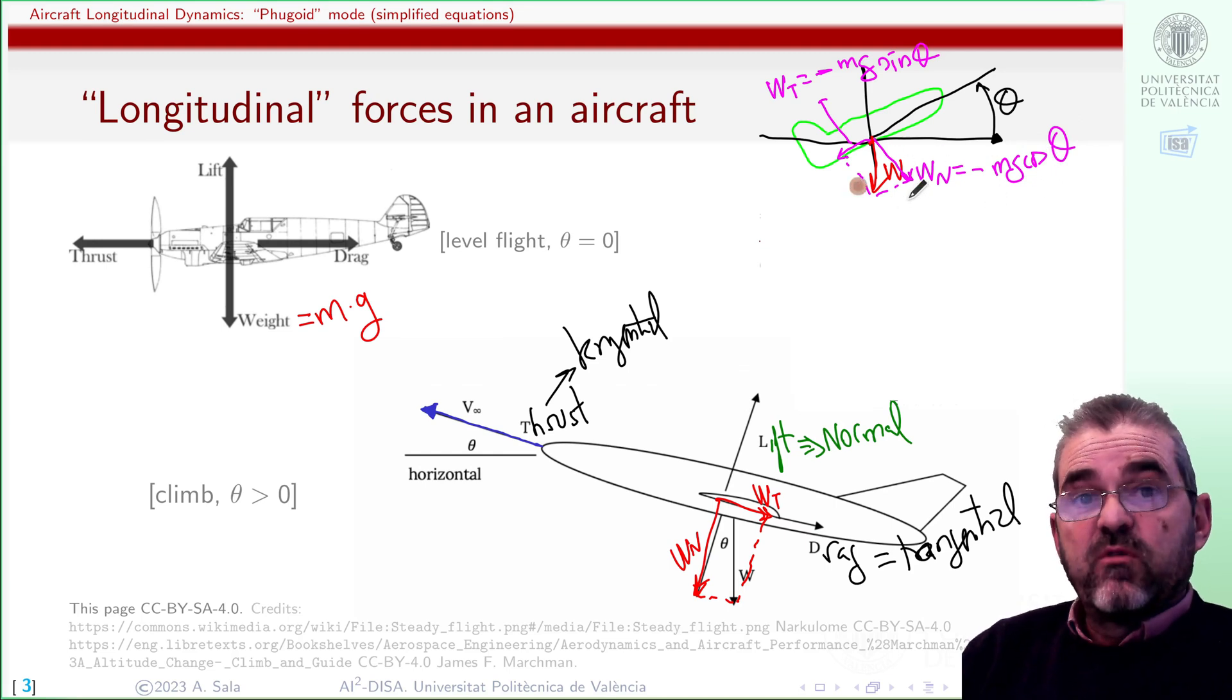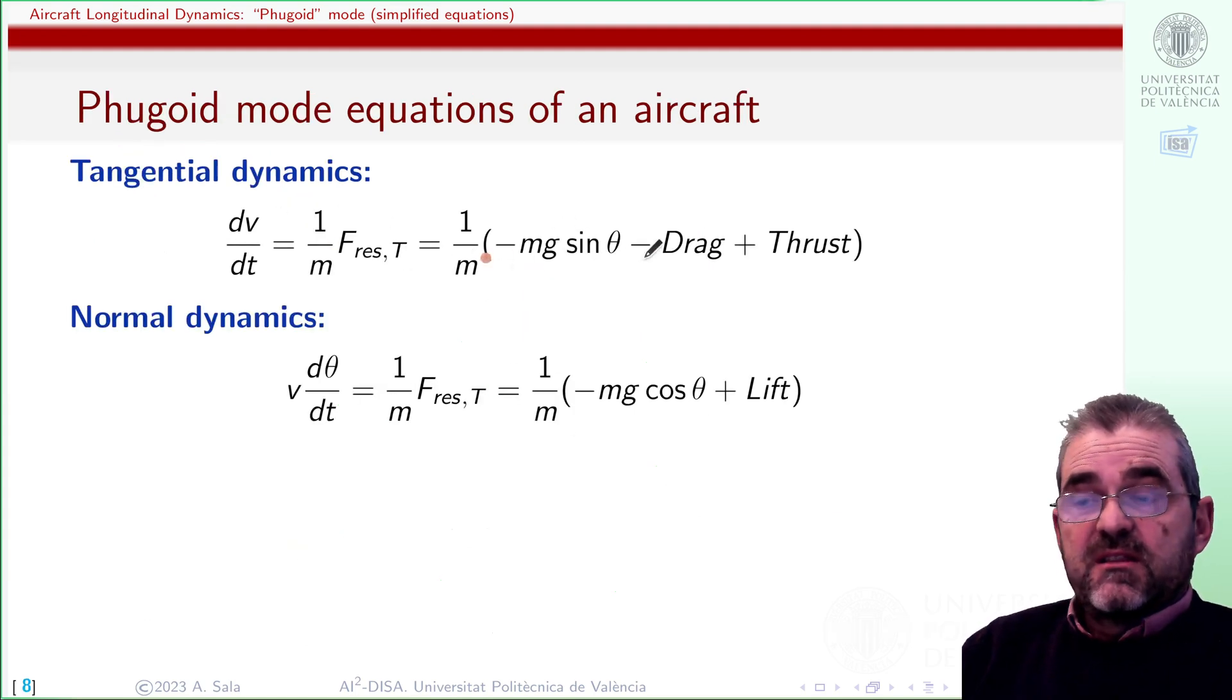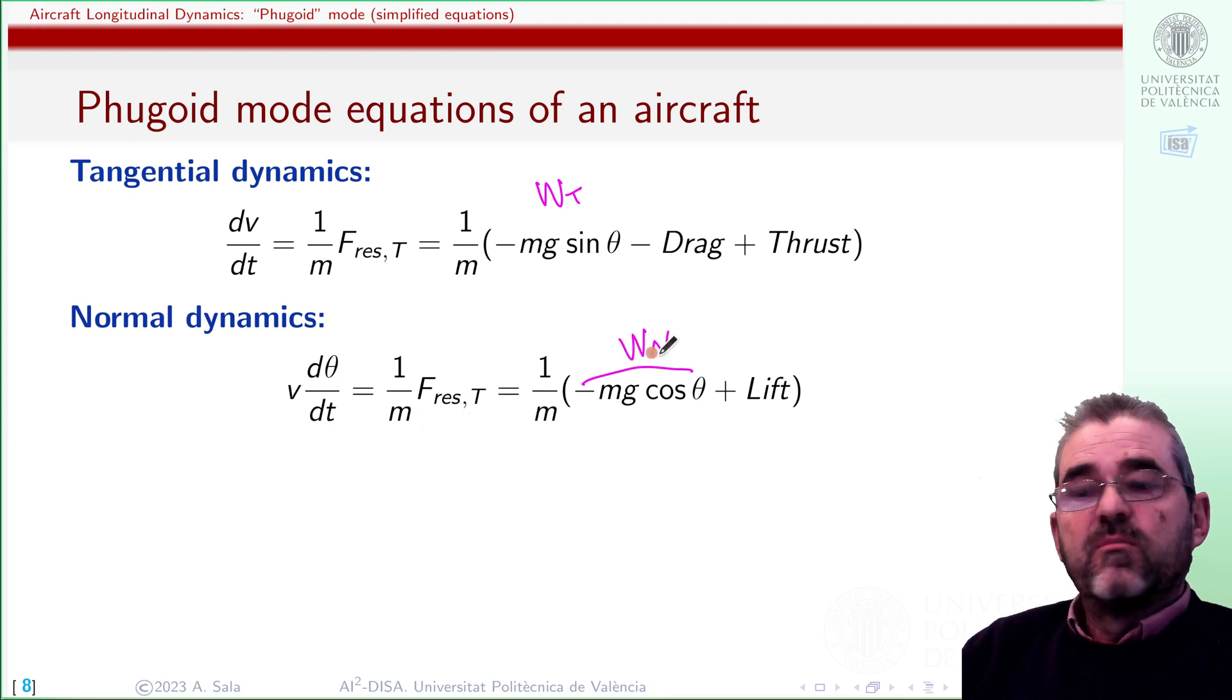And the weight will be the only force with sin or cos stuff because thrust, lift and drag are 100% normal or tangential. Hence, dividing these equations by mass and substituting the force balance we get this tangential dynamics equation. This is tangential component of weight, drag and engine thrust, and this will be the normal dynamics equations. Resulting force divided by mass being this thing the normal component of weight and lift being normal by definition. So these two equations will be the equations of movement and they are the main goal of this video.